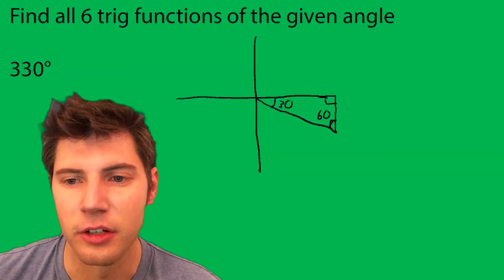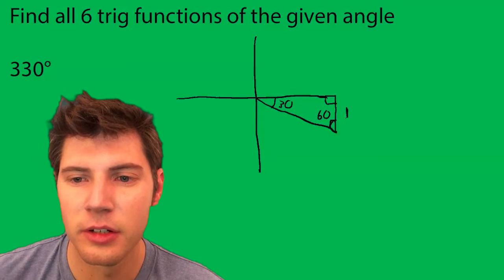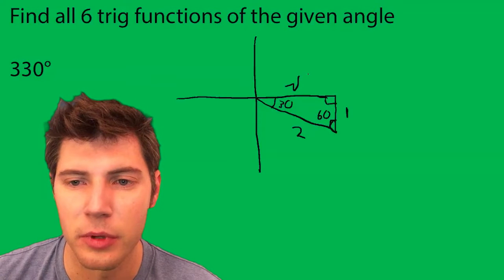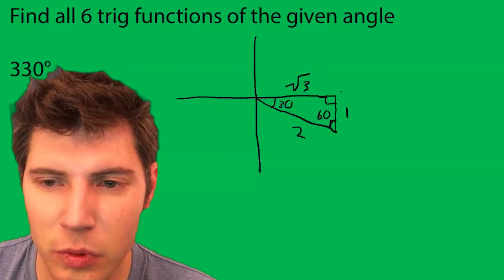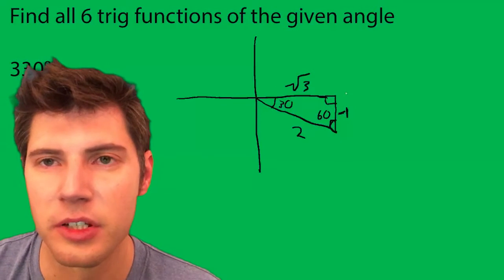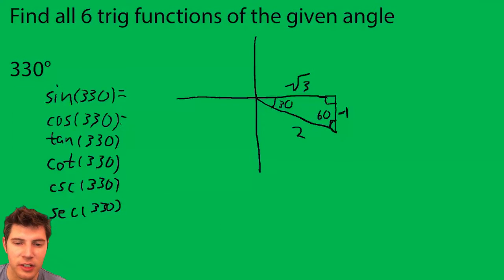So in a 30-60-90 triangle, I know this is 1, the hypotenuse is 2, and the side opposite the 60 is root 3. One other detail is this one right here should be a negative one because it's going down, but the root 3 stays positive. Here are the six trig functions.